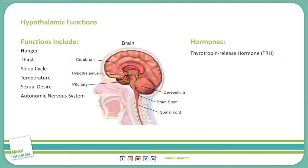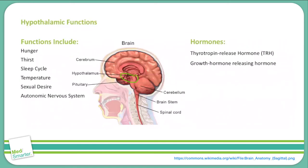The next hormone released by the hypothalamus is growth hormone releasing hormone, or GHRH, which stimulates the release of growth hormone from the pituitary gland. The hypothalamus also releases gonadotropin releasing hormone, also known as GnRH. GnRH stimulates the release of gonadotropins — follicle stimulating hormone (FSH) and luteinizing hormone (LH) — which in turn lead to the release of estrogens and androgens from the gonads.